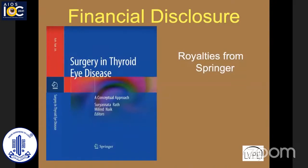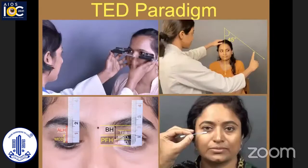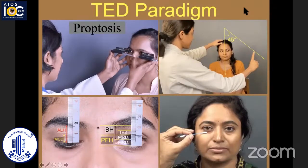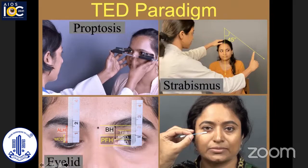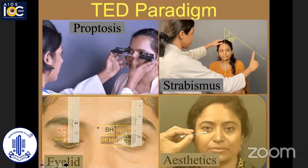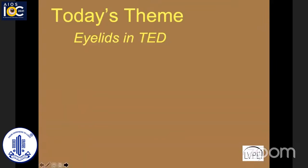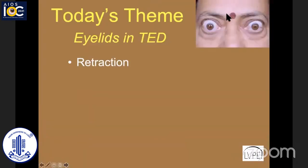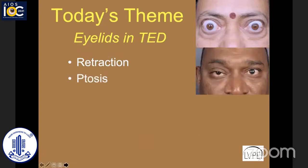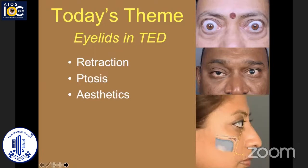Most of what I'm going to speak about has been derived from the textbook that we recently published with Springer. As we all know, the thyroid paradigm is to initially tackle proptosis, then take care of motility, and third comes the eyelid. Finally, the last paradigm is to deal with aesthetics. Most of my talk is going to hover on these last two areas. Today I'm going to talk mainly about eyelid retraction, then a little bit about ptosis in thyroid eye disease, and also the aesthetic aspects pertaining to the eyelid.